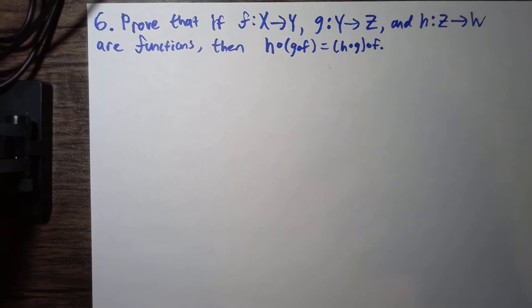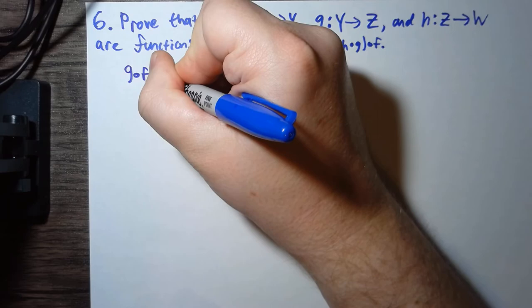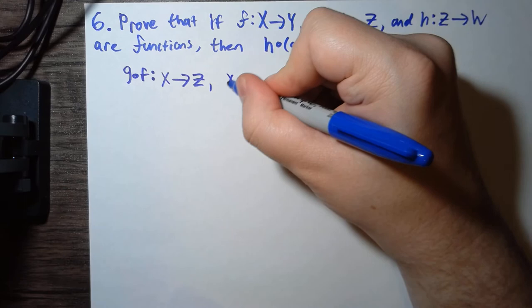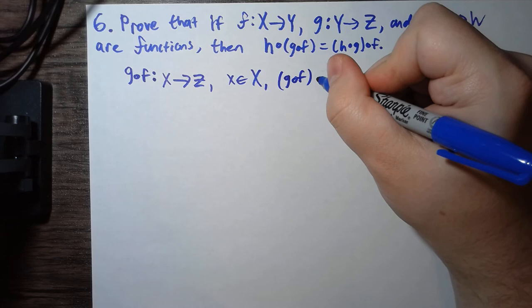And let's just write down what g∘f is. So recall g∘f, this will be a function from X to Z. And given little x in the set X, then g∘f, if this function, if we input x...